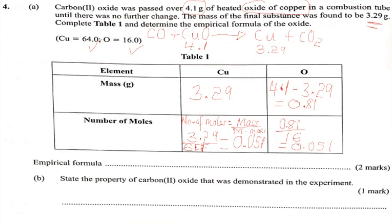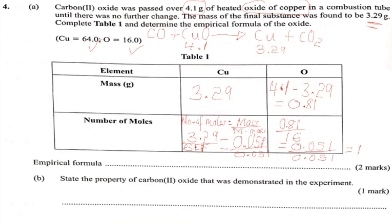To get the empirical formula, we find the whole number ratio by dividing each number of moles by the smallest value, which is 0.051. So copper: 0.051 ÷ 0.051 = 1, and oxygen: 0.051 ÷ 0.051 = 1. The empirical formula is therefore CuO — that is copper 2 oxide.